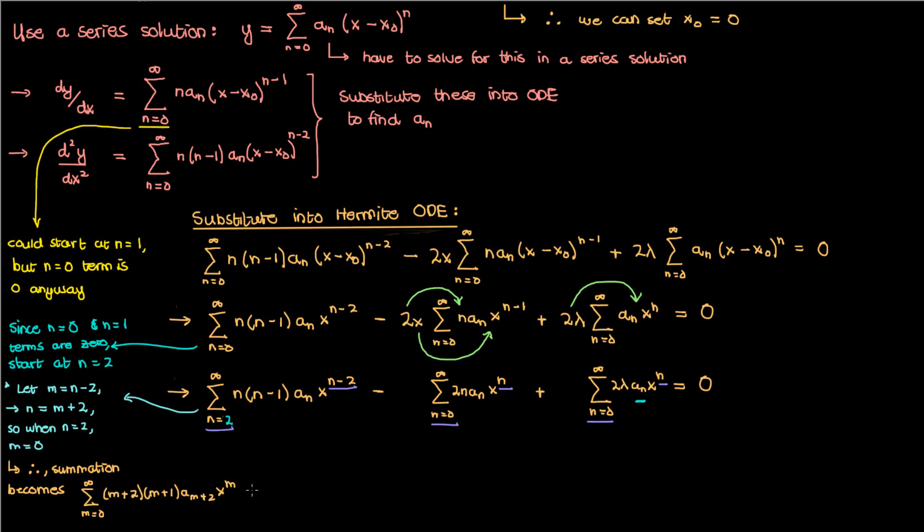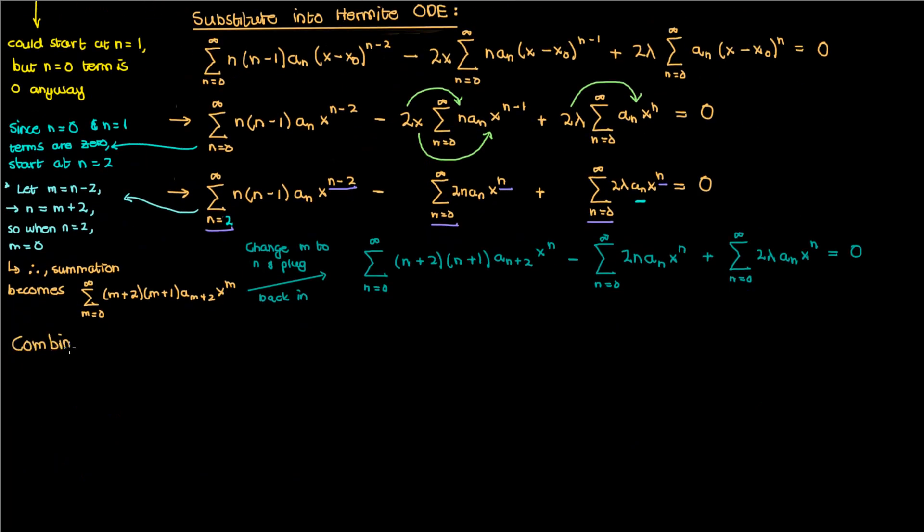Note that n and m are just random letters we picked for our indices. We're not restricted to picking m as our new index, so what I'll do is I'll change m back to n since it doesn't really matter what letter we have, and when we do that here's what we end up with for our equation. Now we're at the stage where we can combine our summations to a single summation because we're starting at 0 everywhere and we have the same exponent on x throughout. We can now take the x to the n common to get the following.